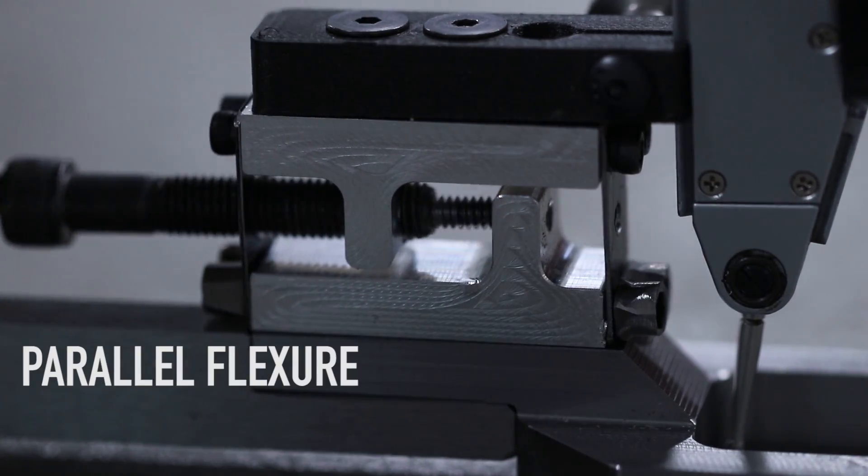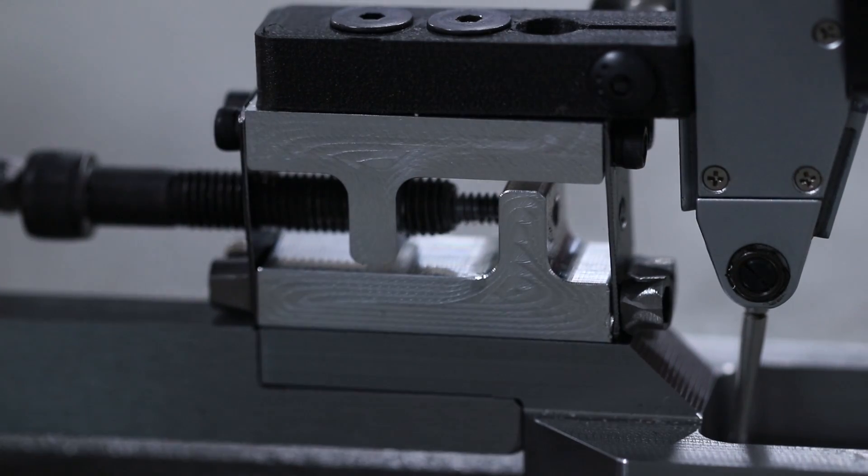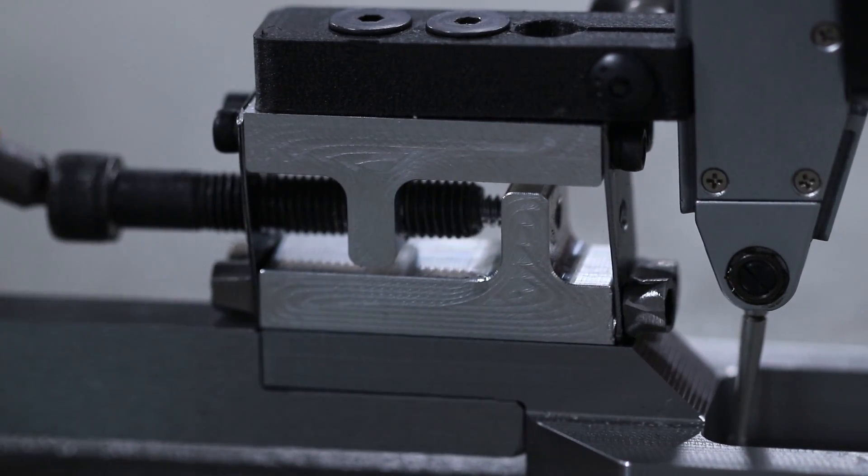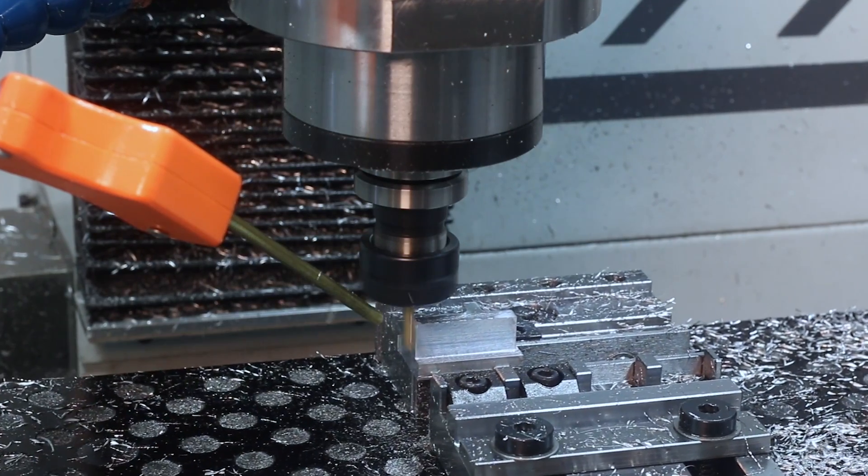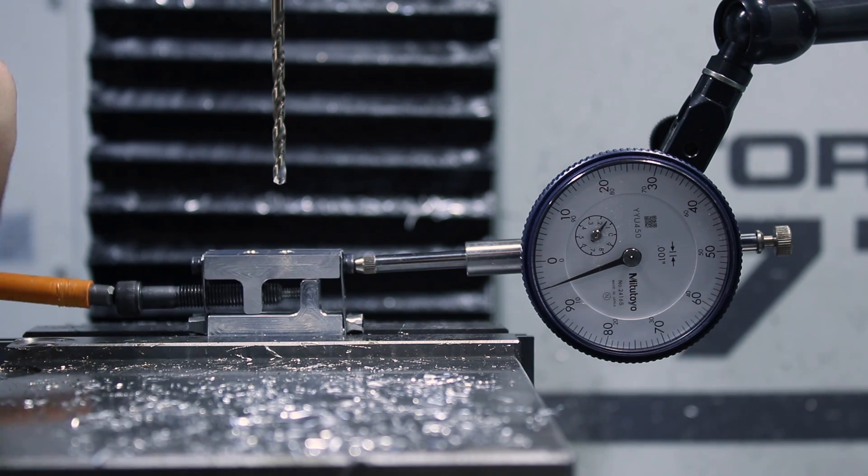This is the mechanism that mounts the indicator to the actual arm itself and allows for that fine adjustment that we're going to need. We've got two parts that I'm going to machine on the Tormach and then we'll put this part together and make sure that it is actually turning accurately.